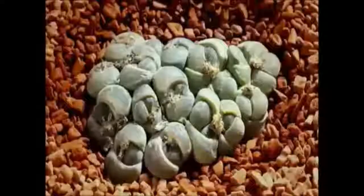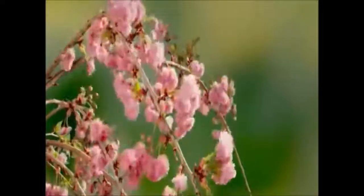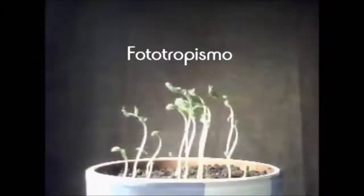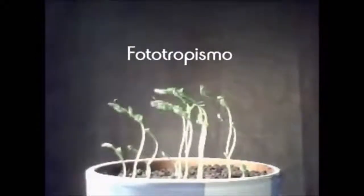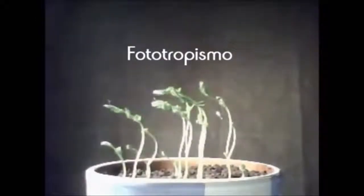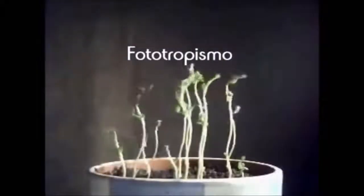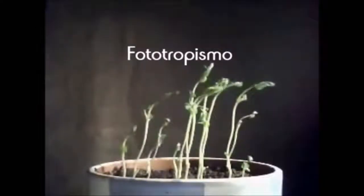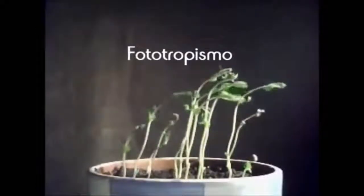Ahora vamos a hablar del fototropismo. El fototropismo es la respuesta de un órgano vegetal a una variación en la intensidad de la luz. Es decir, la planta se curva hacia la luz, busca la luz. Es un fenómeno controlado por una hormona denominada auxina.